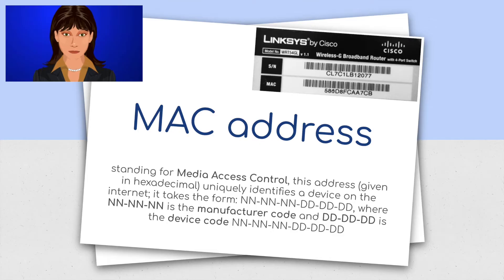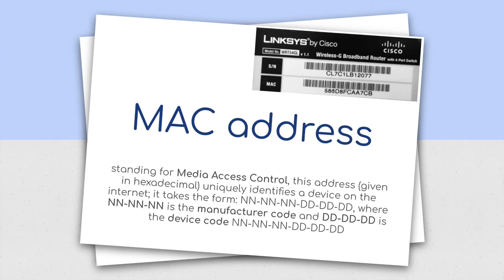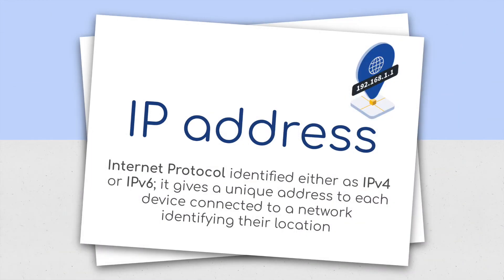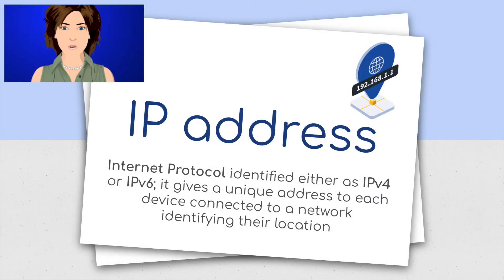The MAC address takes the form NN:NN:NN:DD:DD:DD, where the Ns are the manufacturer code and the Ds are the device code. An IP address: internet protocol, identified either as IPv4 or IPv6. It gives a unique address to each device connected to a network, identifying their location.